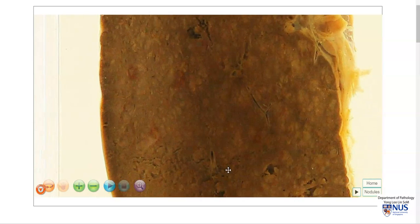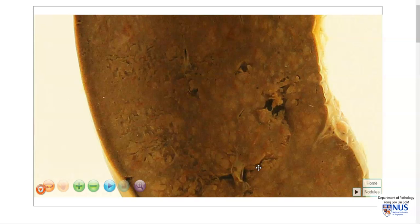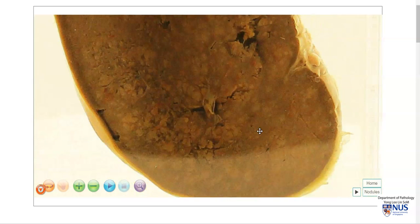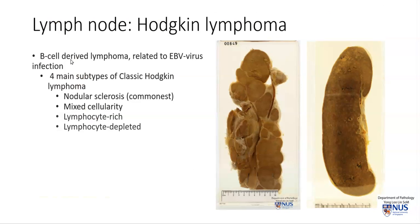I'm just panning through the cut surface of the spleen, where you can see these vague nodular areas. Hodgkin lymphoma is a B-cell-derived lymphoma, and it is related to EBV virus infection. There are four main subtypes of classic Hodgkin lymphoma: nodular sclerosis, which is the commonest type and can sometimes give a more fibrotic appearance to lymph nodes; mixed cellularity; lymphocyte-rich; and lymphocyte-depleted classic Hodgkin lymphoma.